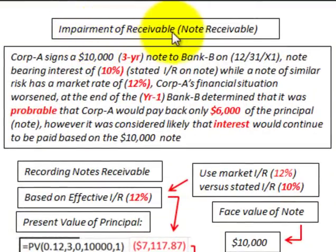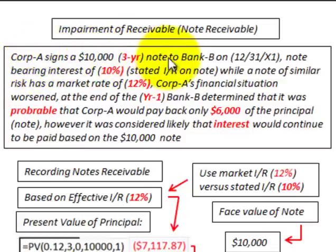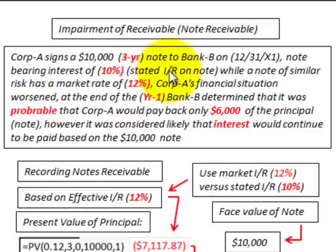Here we're going to be looking at an impairment of a receivable — specifically a notes receivable that's impaired. Corporation A signs a $10,000 three-year note to Bank B on 12/31/X1. The note has a stated rate of interest of 10%, while a note of similar risk has a market rate of interest of 12%.